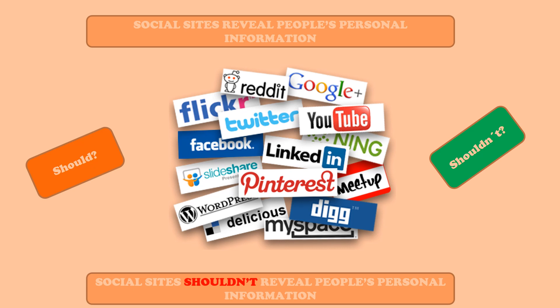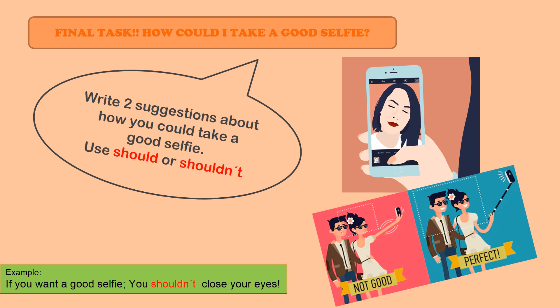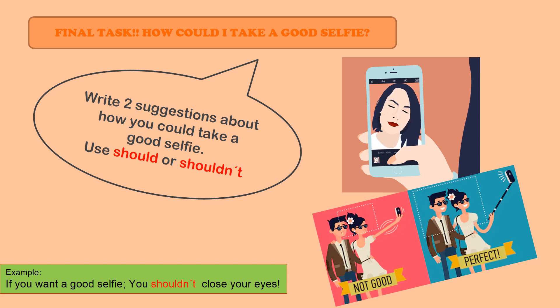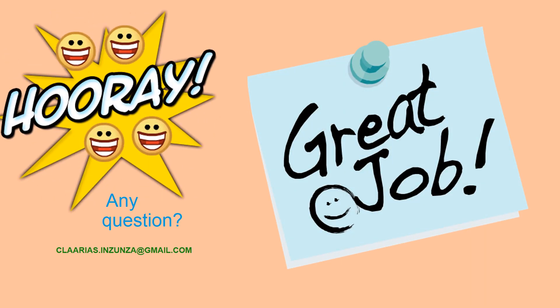Social sites reveal people's personal information. Recommendation: Social sites shouldn't reveal people's personal information. In order to finish, I have a task for you. Read the following statements and put a tick or cross depending on what you should or shouldn't do. Final task: please write two suggestions about how to take a good selfie. For example: if you want a good selfie, you shouldn't close your eyes. When you finish, please send me an email. Have a nice week, take care, and see you soon!